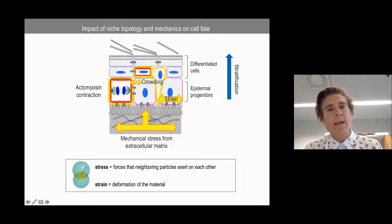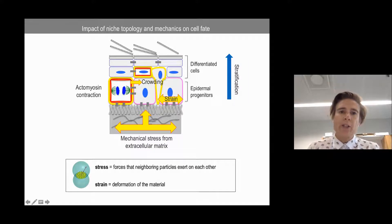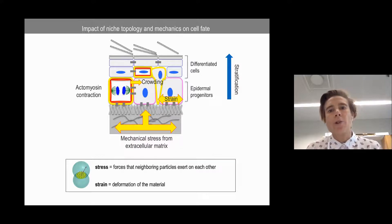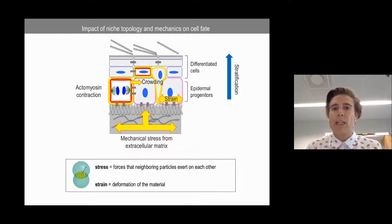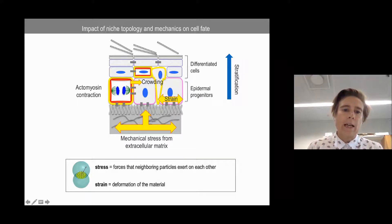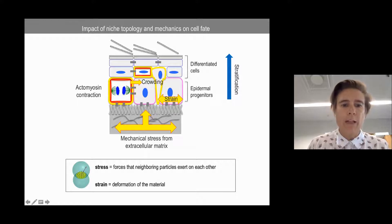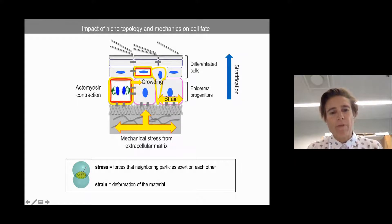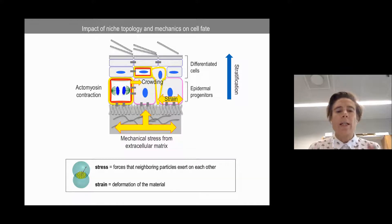We hypothesized very simply that if a stem cell is dividing, it might generate compressive forces to each neighbor, and this compression could signal the neighbor to differentiate. Conversely, if a cell differentiates and migrates upward from the basal layer, it liberates space, which could signal the stem cell to divide. Going further, cells could also sense mechanical stresses from the extracellular matrix underneath and translate them into signals of growth. When I say 'stress' I mean specifically a force that neighboring particles exert on each other, and 'strain' is the resulting deformation.